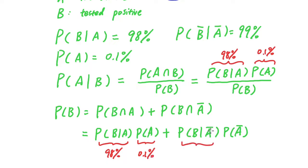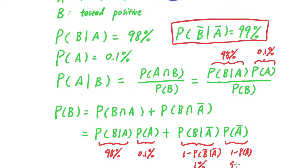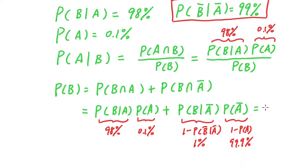And P(B) given A bar can actually be computed by 1 minus P(B bar) given A bar. And we have P(B bar), A bar here at 99 percent, so this is really just 1 percent. And P(A bar) is basically just 1 minus P(A), so that's 99.9 percent. As a result, this is equal to 0.01097.